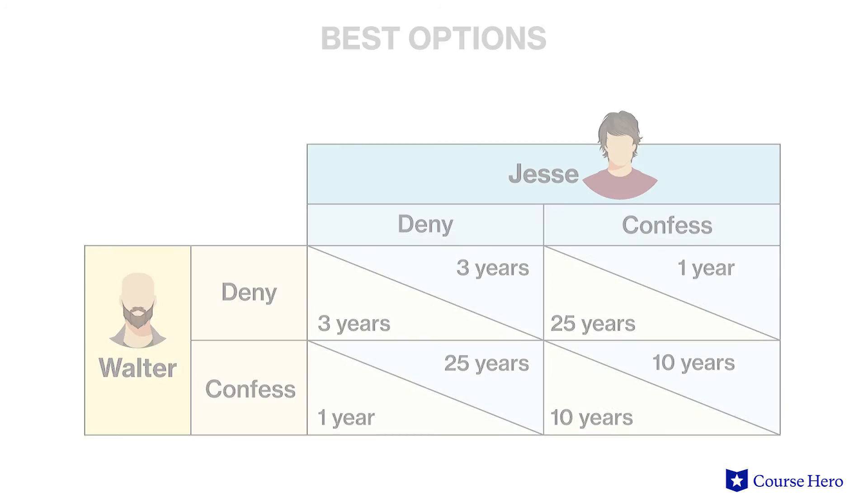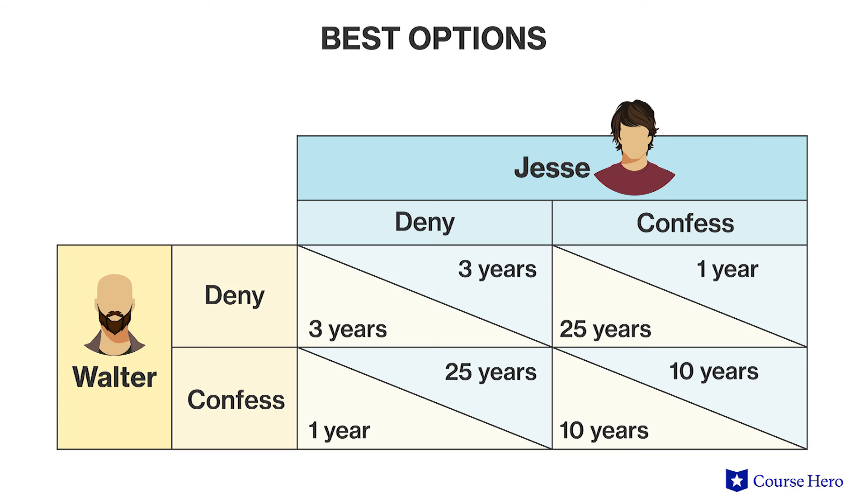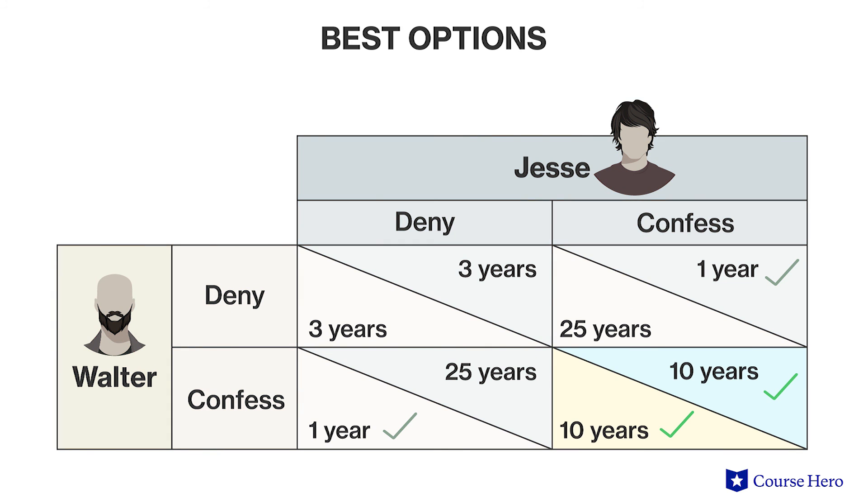In order to determine if a game has a Nash equilibrium, check marks can be placed in the box of each player's best strategy on the payoff matrix. If a box has two check marks in it, this indicates that each player is playing his best option given the strategy chosen by his opponent. A payoff matrix for this example would have two check marks in the 'confess, confess' box, showing that this is the Nash equilibrium.